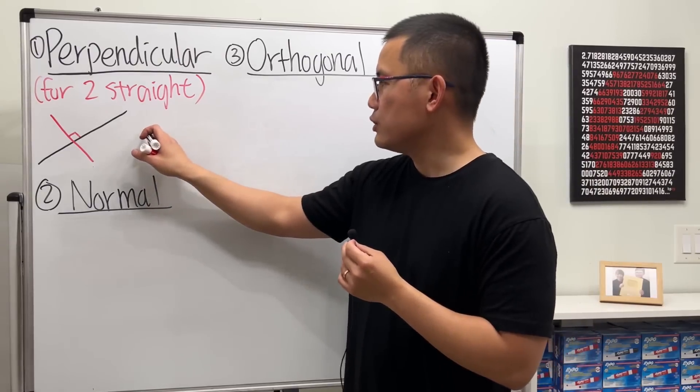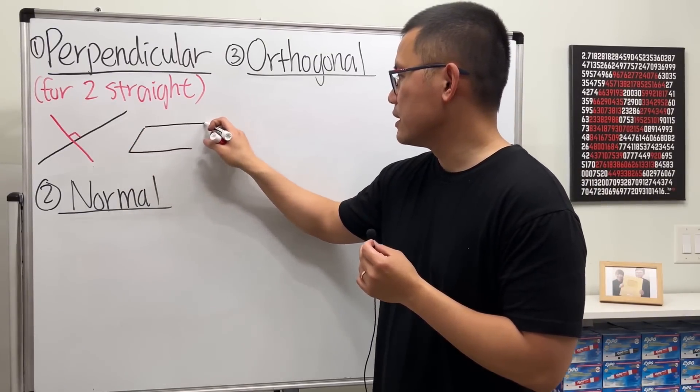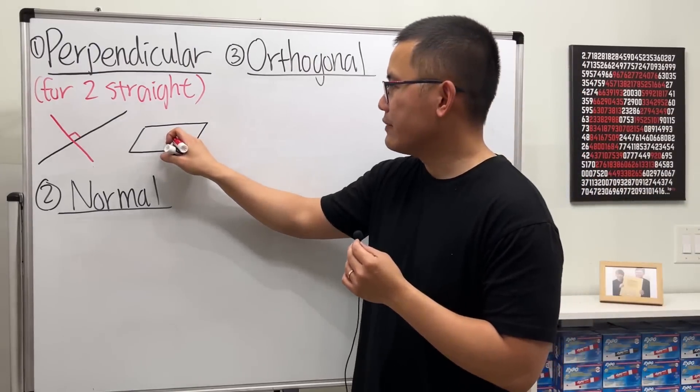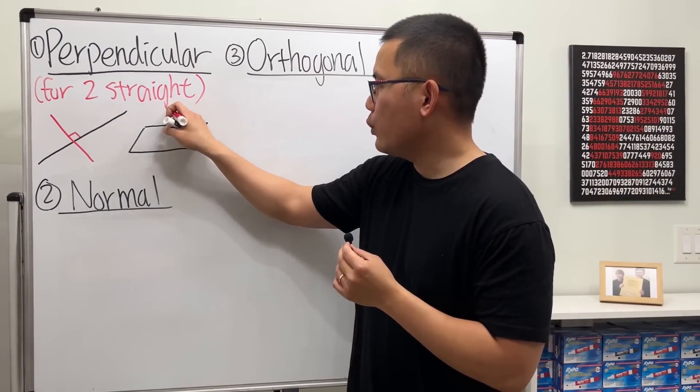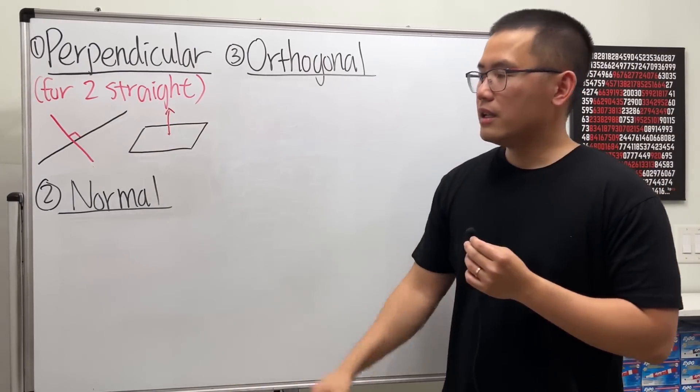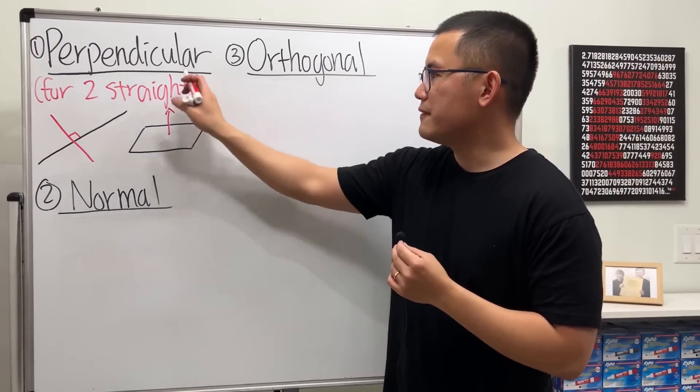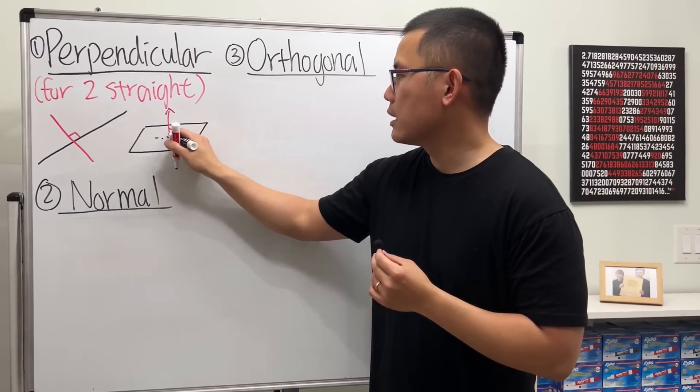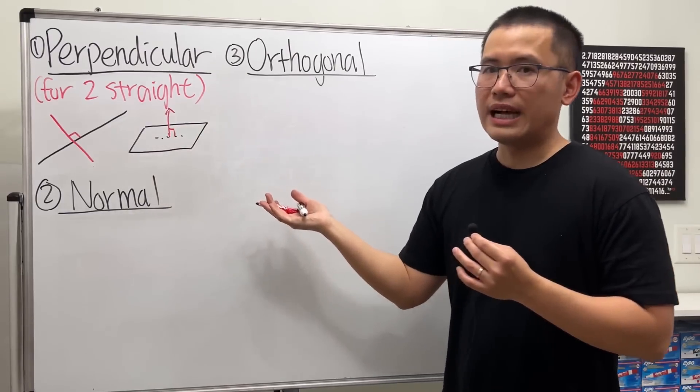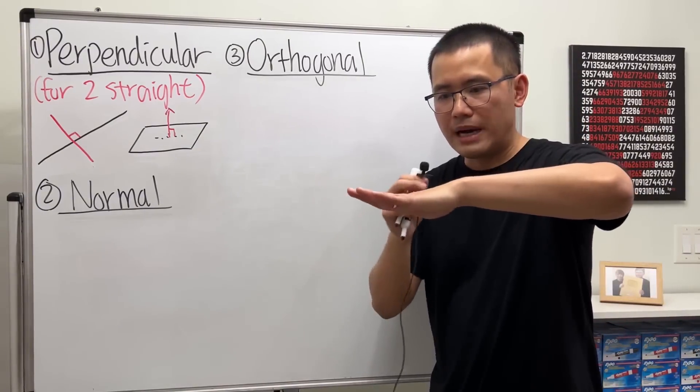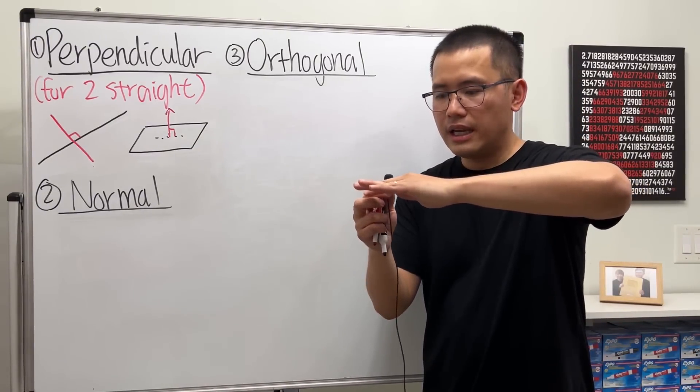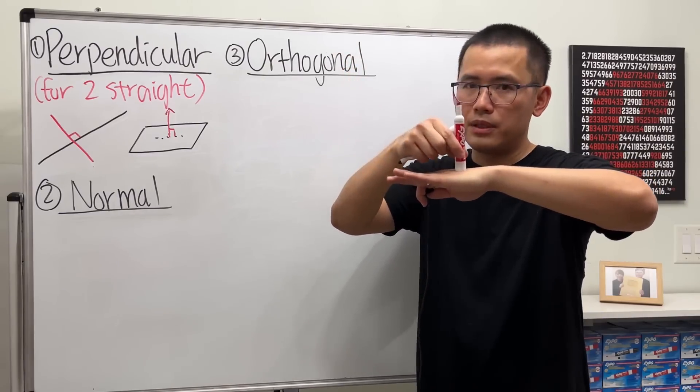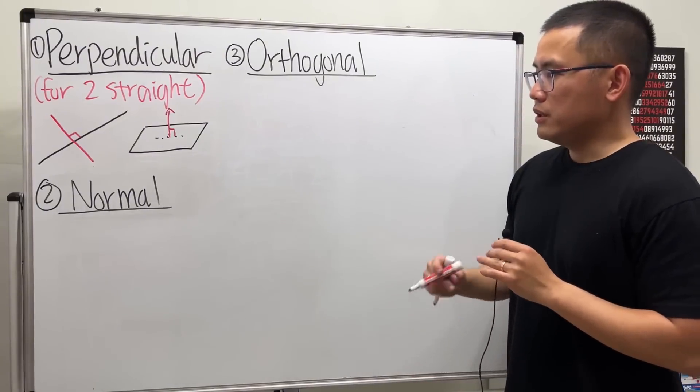Or we can have another situation. Let's say we have a flat surface, just like a plane. You can imagine it's like a whiteboard. And then let's say we have a ray or a vector. If it's going like this, then we say this vector or this ray is perpendicular to this plane. Imagine the plane is like my hand and flat, and the vector is like this marker. We say the marker is perpendicular to my hand. So that's pretty straightforward.